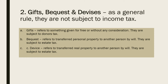Gifts, bequests, and devises are also excluded from income tax. A gift refers to something given for free or without any consideration — subject to donor's tax, but not income tax. A bequest is the transfer of personal property to another person by will, subject to estate tax but not income tax. A devise refers to the transfer of real property to another person by will, also subject to estate tax but not income tax.